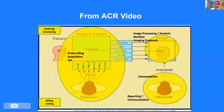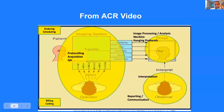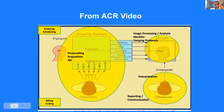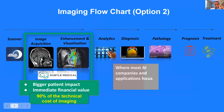If you look at this imaging flowchart — I got this from the ACR website — functions like ordering, scheduling, billing, and coding are very important, and there are AI applications that apply to them. But I'm sure you would agree that starting by applying AI to them is not going to generate much enthusiasm or excitement in the medical community. So could we choose one of the core steps laid out horizontally here, where we go from the scanner all the way to the treatment?